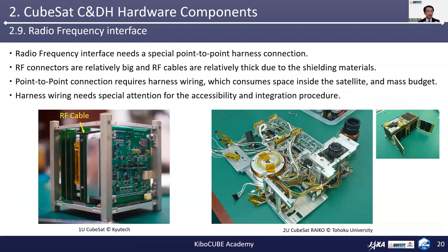Now let's look at the radio frequency interface. A radio frequency interface needs a special point-to-point harness connection in general. So RF connectors are relatively big and RF cables are relatively thick due to their shielding materials. Point-to-point connections require harness wiring which consumes space inside the satellite as well as the mass budget. Harness wiring needs special attention to maintain accessibility and ease of the integration procedure.